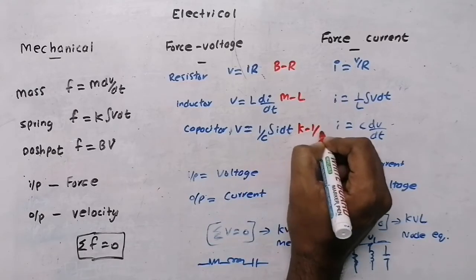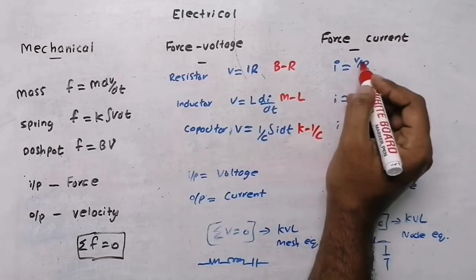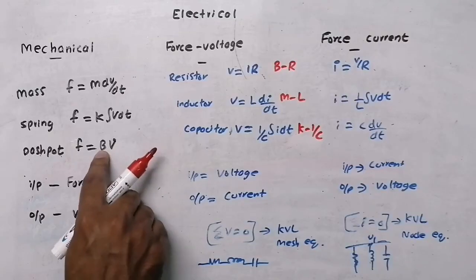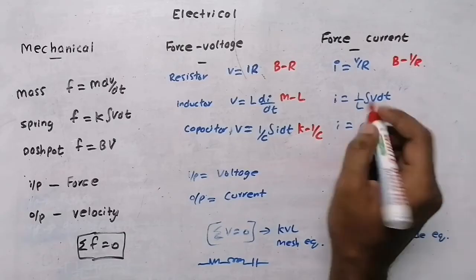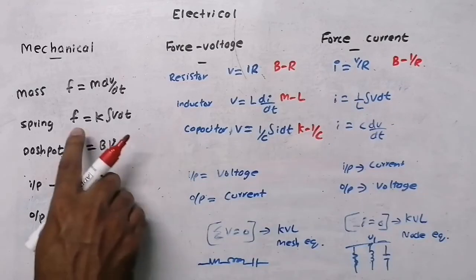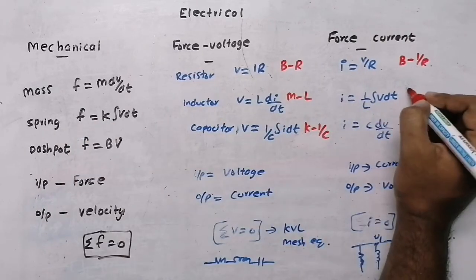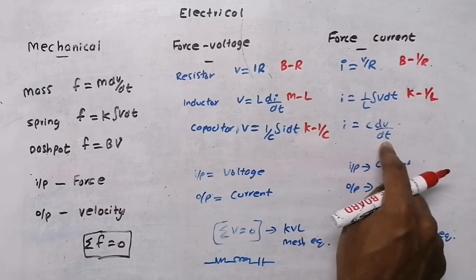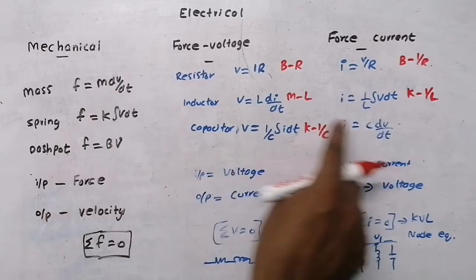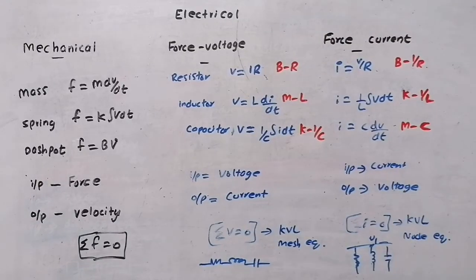In force-current analogy: dashpot corresponds to 1/R, spring corresponds to 1/L, and mass corresponds to capacitance C. So instead of mass we take capacitor, instead of spring we take 1/L, and instead of dashpot we take 1/R. In the next video we will solve a problem based on force-voltage and force-current analogy.